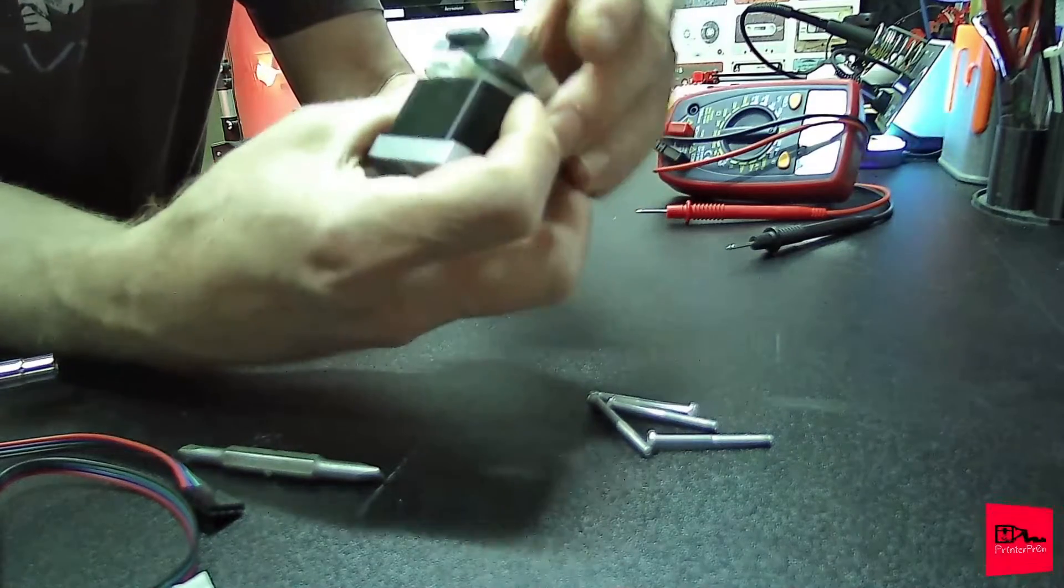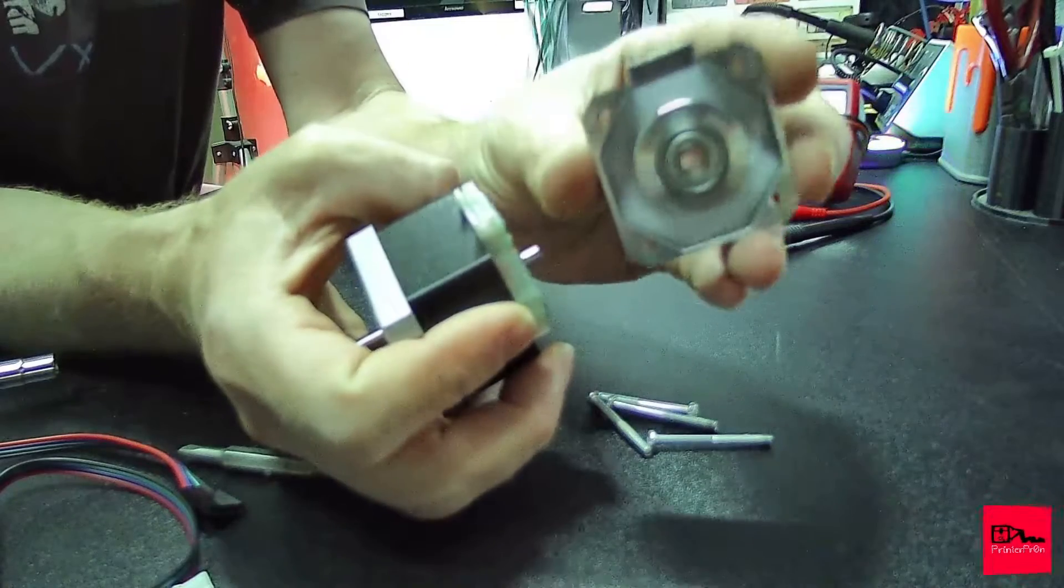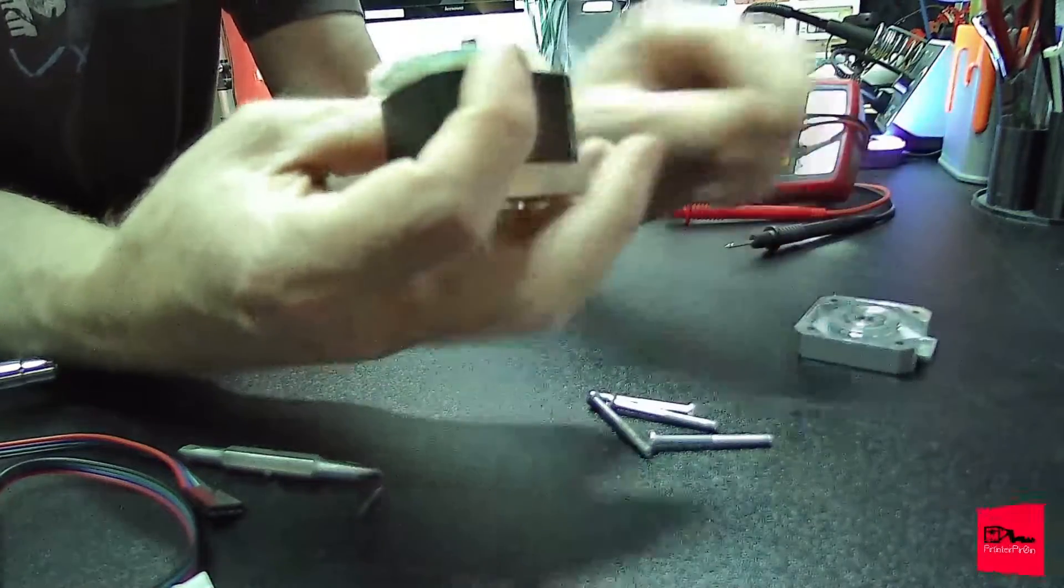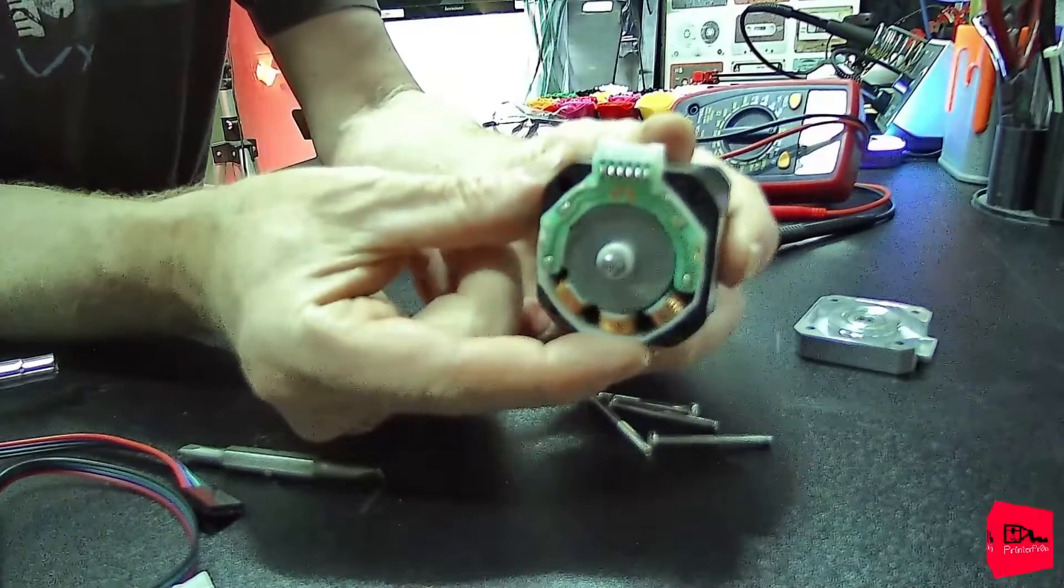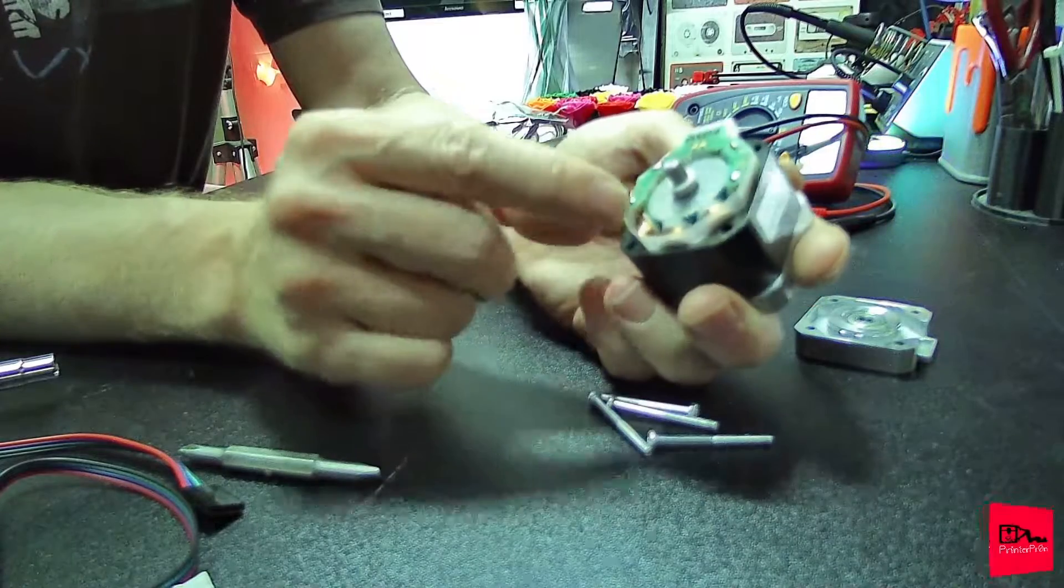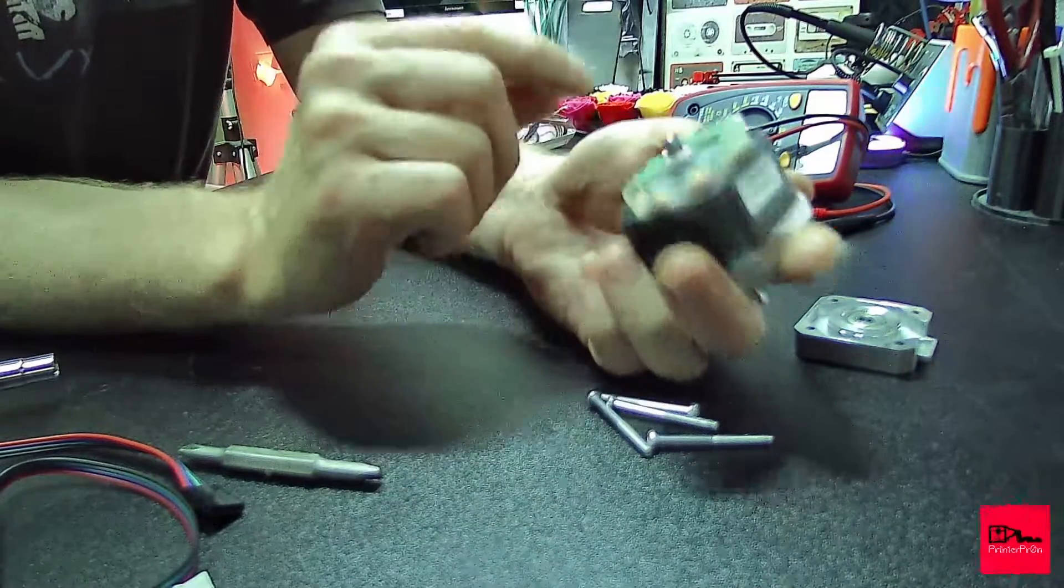You can see there's some bearings sitting in there. This is what the inside looks like. As you can see, here's where those two wires go to for the left and the right.